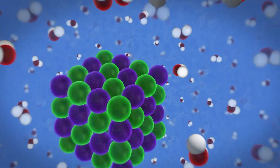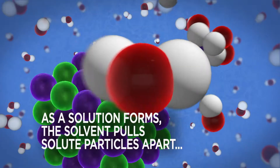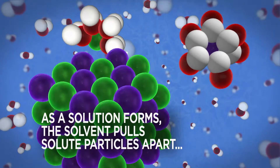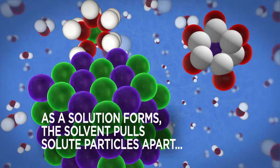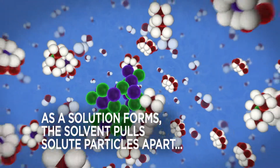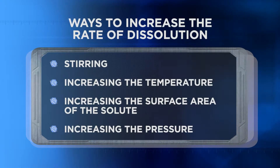In Unit 7, we learned how solvents dissolve ionic and covalent solutes, whether they're solid, liquid, or gas. And we found that there are several ways to increase the rate of dissolution of the solute by the solvent.